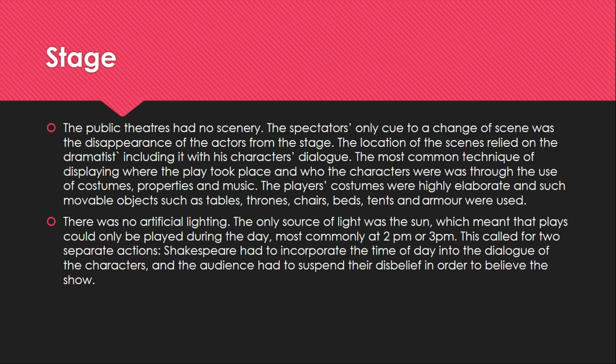Because there was no scenery, the playwright had the additional responsibility of describing each scene. At the start of a scene some character would describe whether they are in a field, near a river, or near the sea. Through characters' dialogues, such descriptions about scenes had to be made because there were no set scenery in the theater. The location of scenes relied on the dramatist including it within the characters' dialogue.